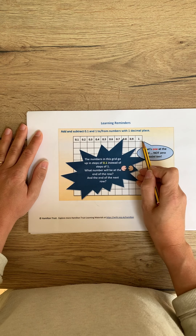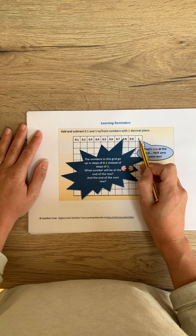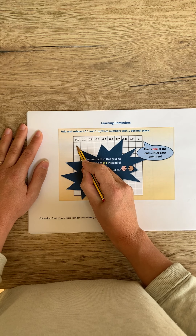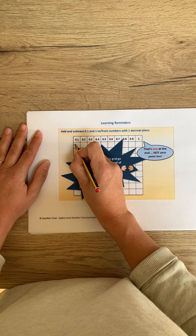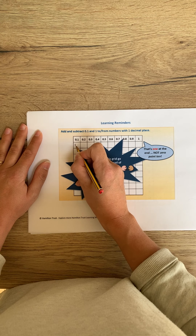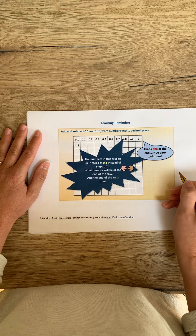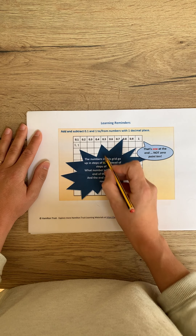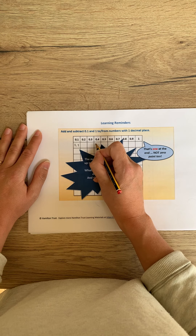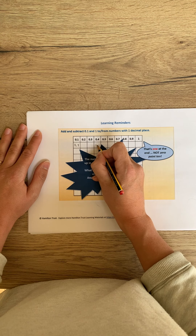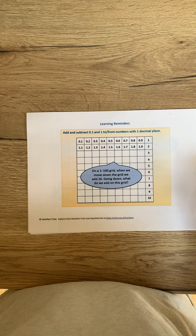Having a look at this, if we know that the last number on this line is one, what do we think might be here? Have a think. It would indeed be 1.1 — well done if you said that. And what number do you think might be here? Well done if you said 1.4.